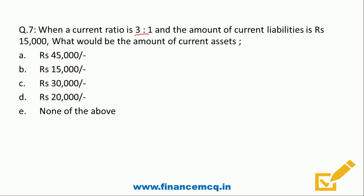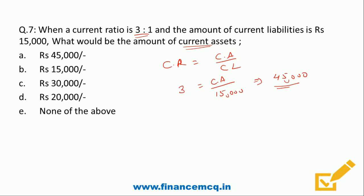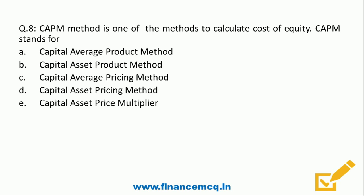Question seven: When the current ratio is 3:1 and the amount of current liabilities is Rs. 50,000, what will be the amount of current assets? The formula for current ratio is current assets divided by current liabilities. The ratio is 3 and current liabilities are Rs. 15,000, so current assets equal Rs. 45,000. The correct answer is option A - Rs. 45,000.